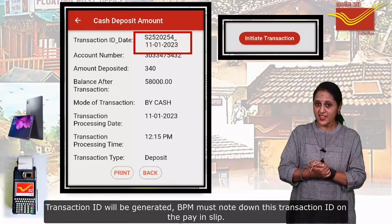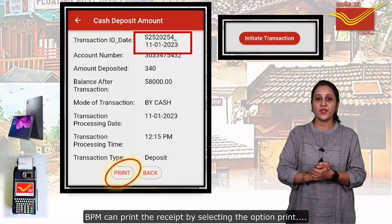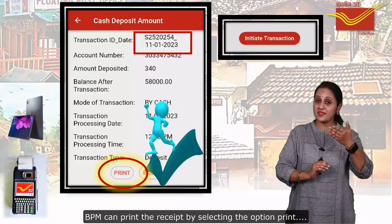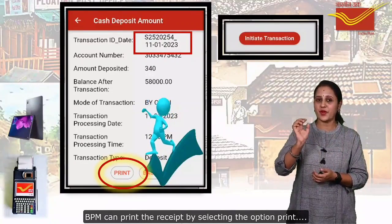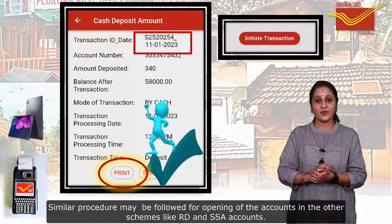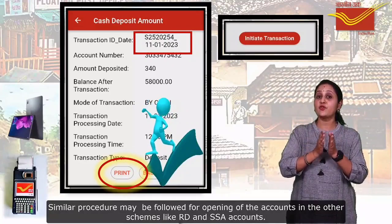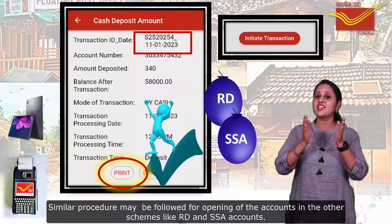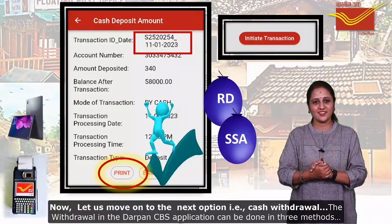BPM must note down this transaction ID on the tally slip. BPM can print the receipt by selecting the option print. Similar procedure may be followed for deposits in other schemes like RD and SSA.